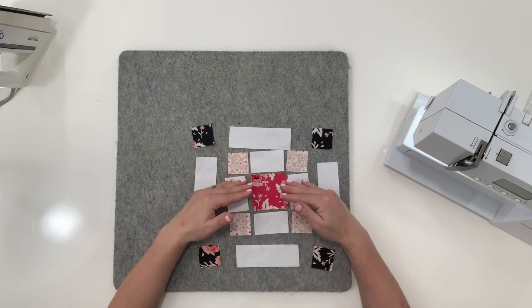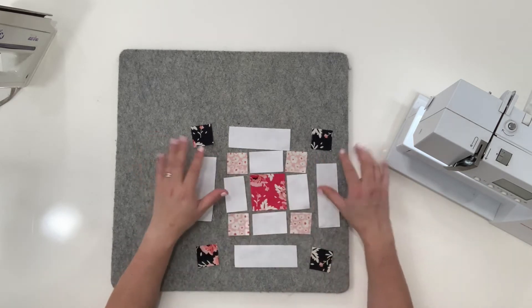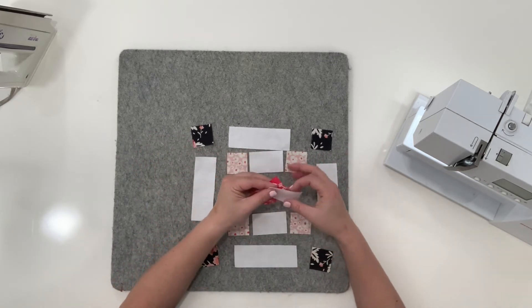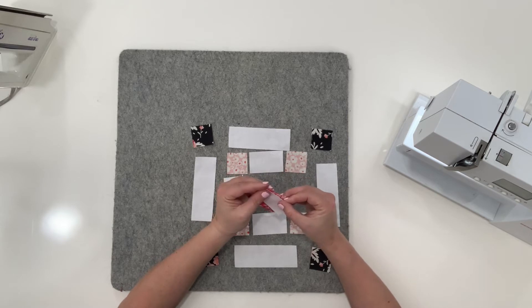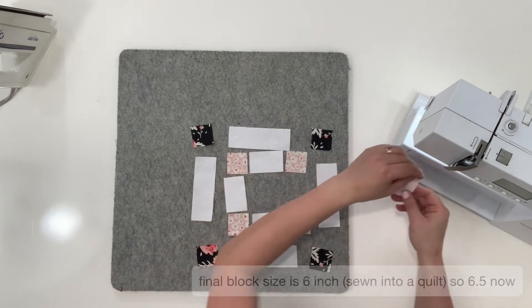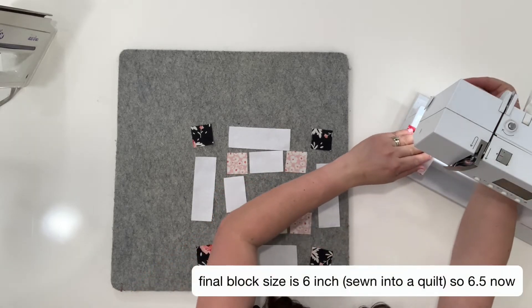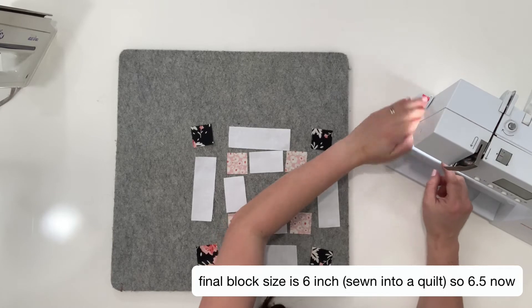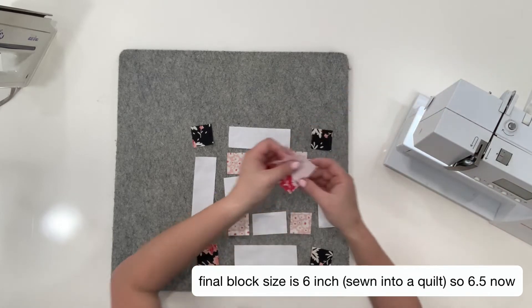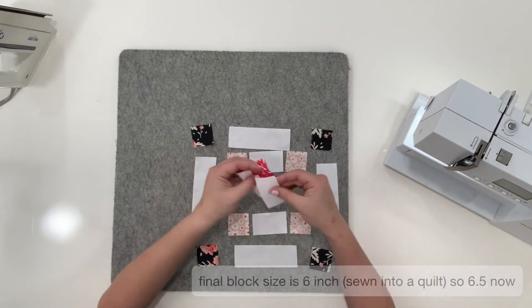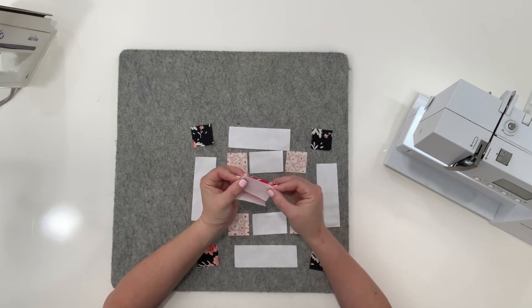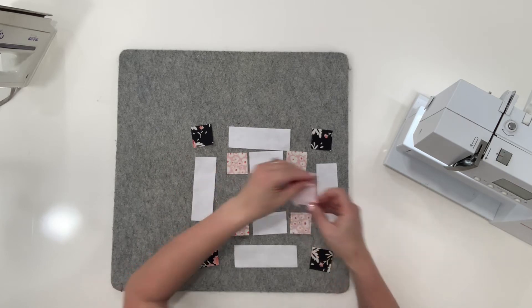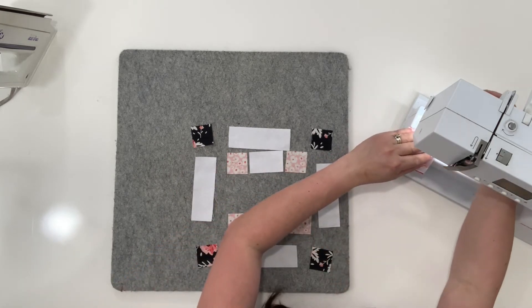So we're going to start with the middle and sew our way out. So we're going to start right here. This is really quick sewing. So you are working with six and a half inch blocks. So these blocks are quite small. And you'll notice I'm putting this on my wool pad here just so you can see it better.